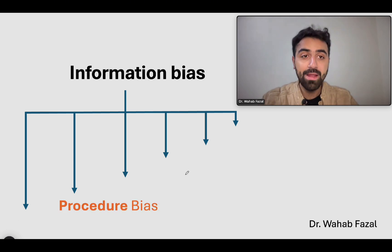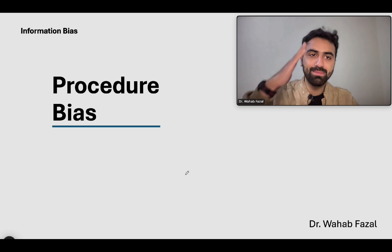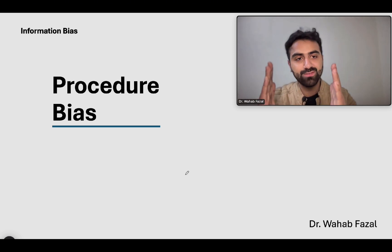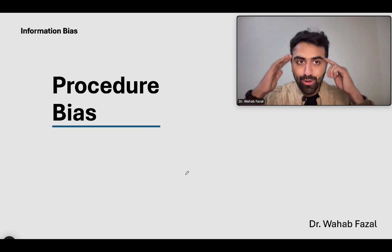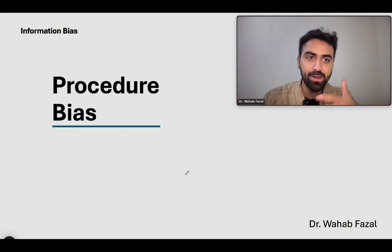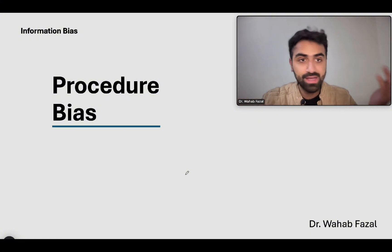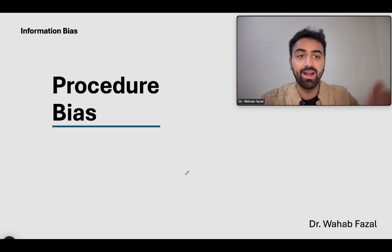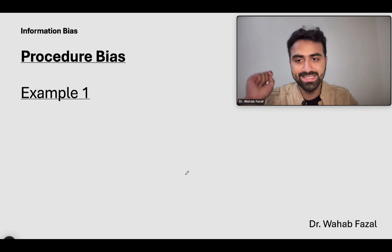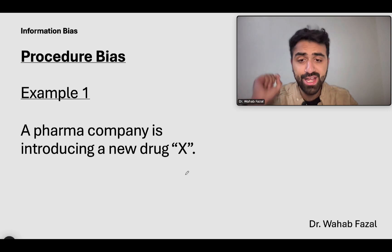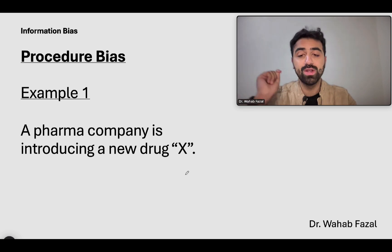The second type is something called procedure bias. We'll do the same thing — take one example, define the bias, and then use a second example to really solidify the concept.